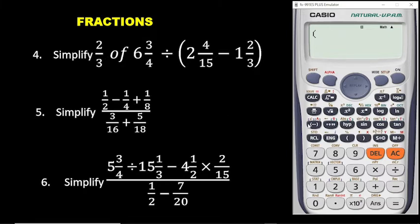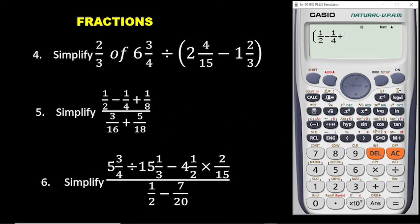Then you move the right arrow to take the cursor up. Minus. Then we have another fraction, so you click the fraction button, we have 1, then go down and then 4. To bring the cursor up, press the right arrow. Then we have plus — so plus 1 over 8. We have fraction, you click the fraction button, enter 1, go down, and then we have 8. Then go up so that you can close the bracket. Now if you close the bracket while the cursor is down, your work will be wrong. So to move it up, press the right arrow — now the bracket is up. So we can close the bracket, and all the top numbers have been written.